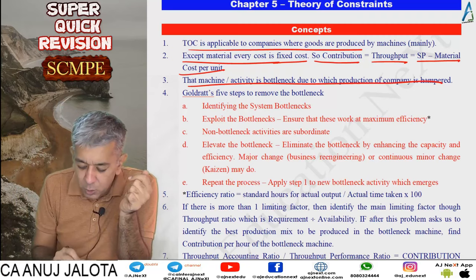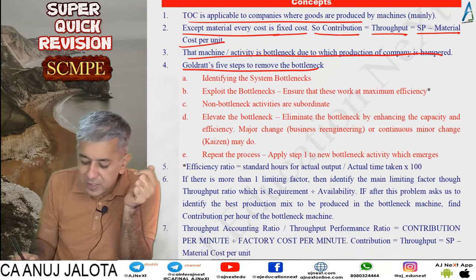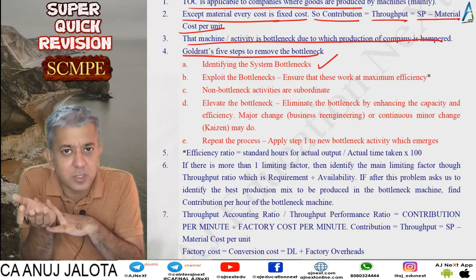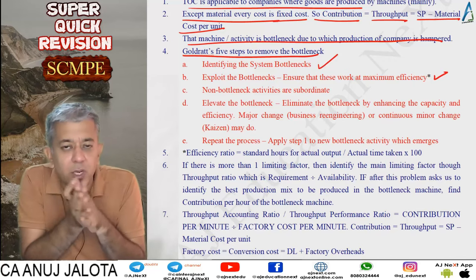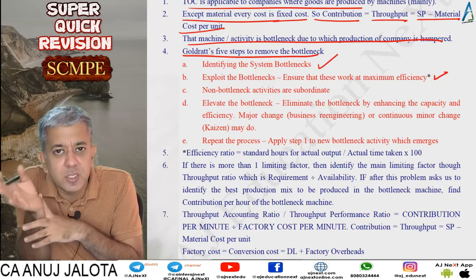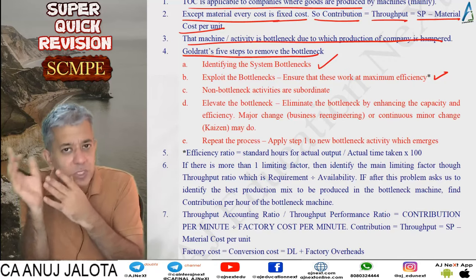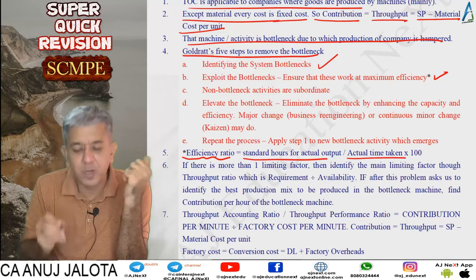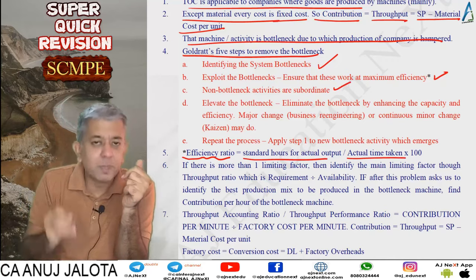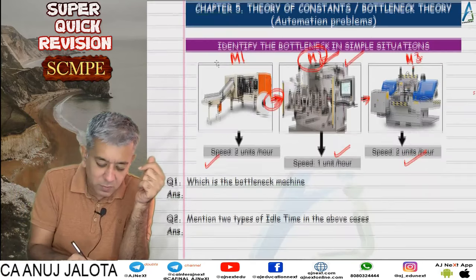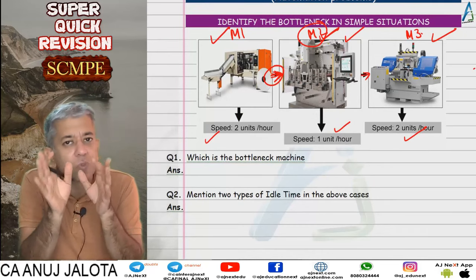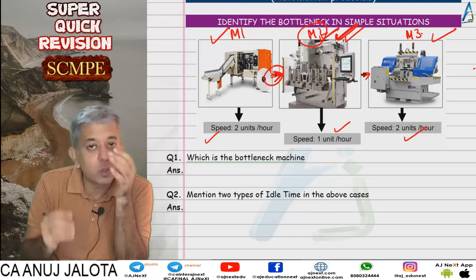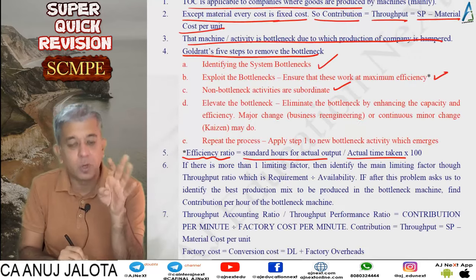Goldratt — the person who created this theory — says we have five steps to remove the bottleneck. First, identify your bottleneck — in my example, machine two with low speed is the bottleneck. Second, exploit the bottleneck — use it properly, operate it at maximum efficiency. Efficiency is computed as standard hours for actual output divided by actual time taken, into 100. Non-bottleneck machines like machine one and machine three — we say they are subordinate.